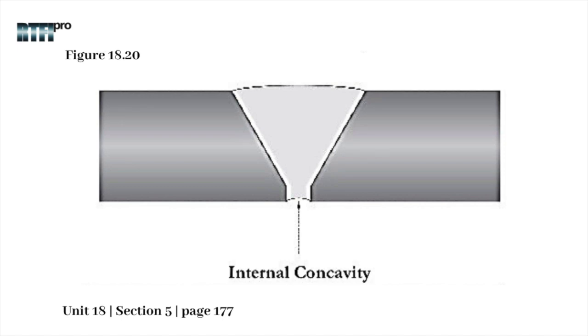Internal concavity is a concave condition in the root pass that results from insufficient heat input while depositing the root pass. It is sometimes referred to as suckback.